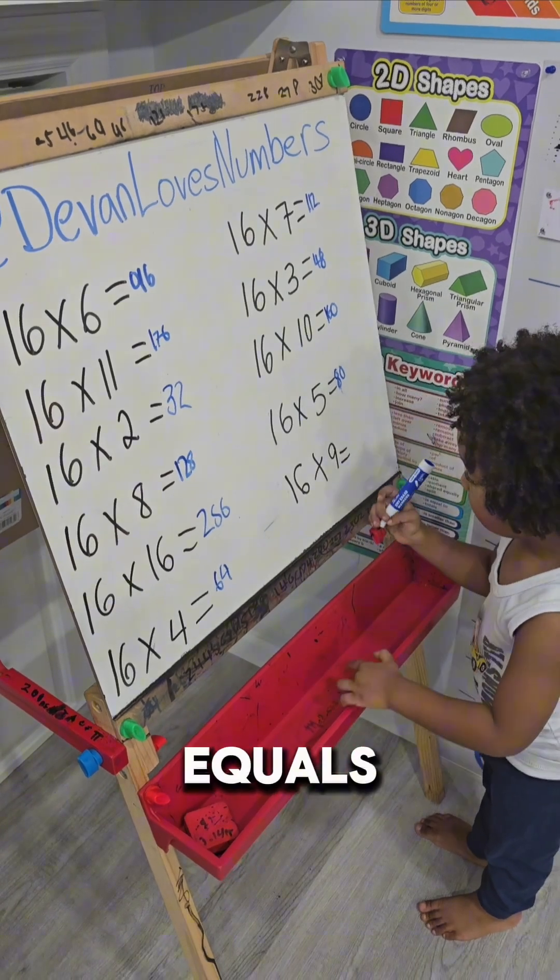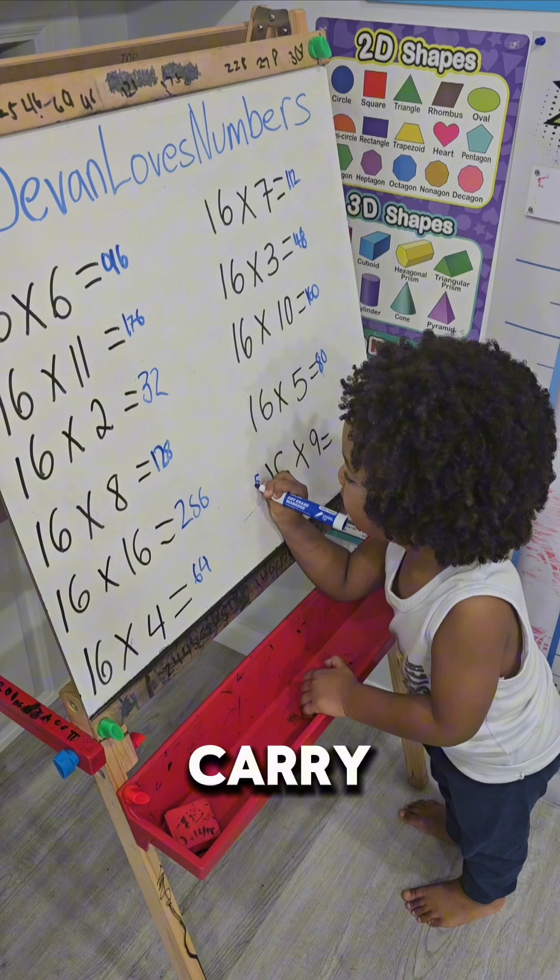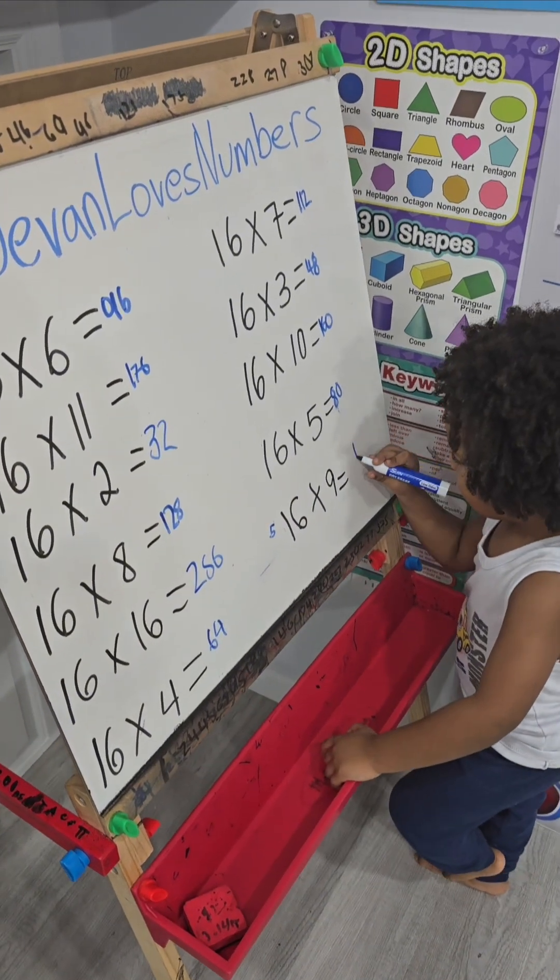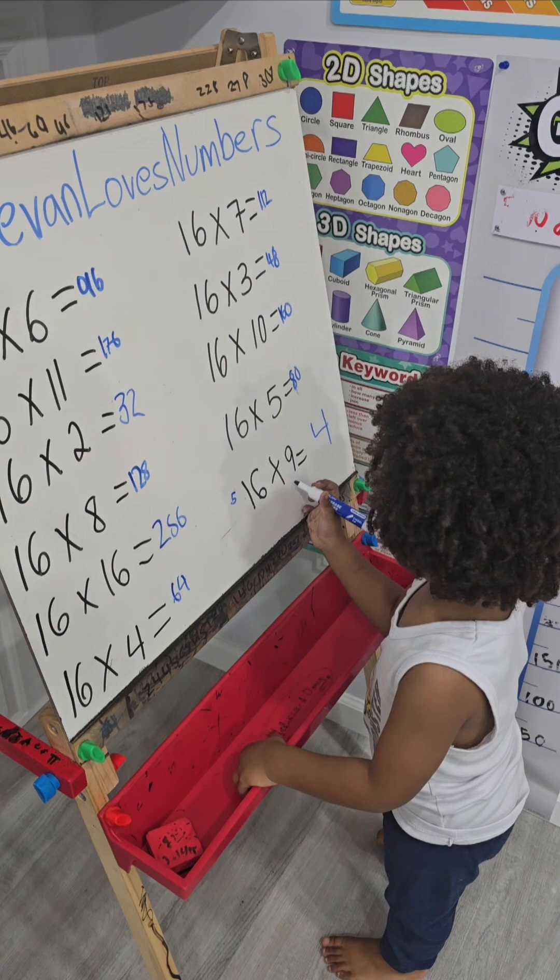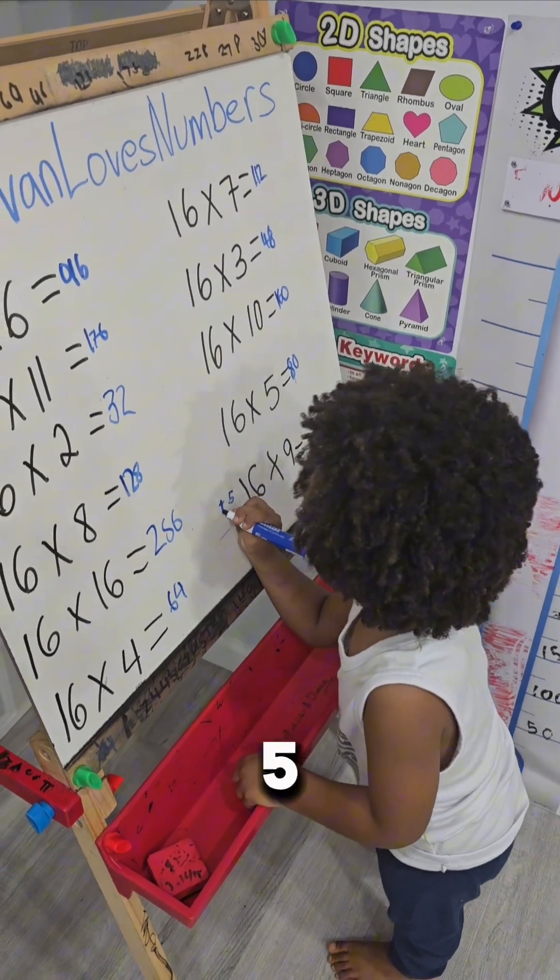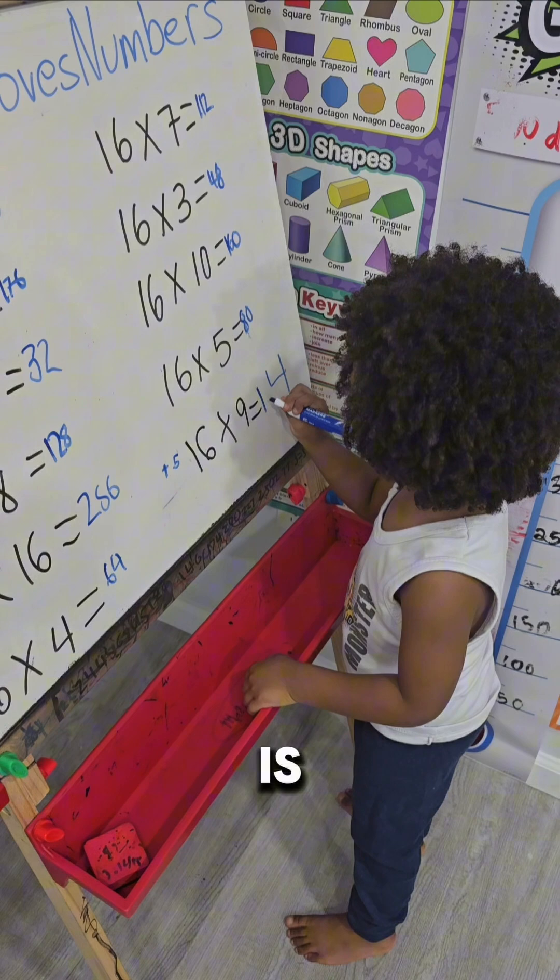16 times 9: 6 times 9 is 54, you've got to carry, and then the four remains right there. 9 times 1 is 9. 9 plus 5 is 14.